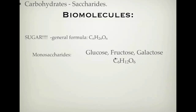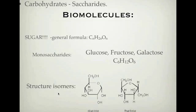All three monosaccharides have the formula C6H12O6. They all have the same formula; however, they have a slightly different structure — they are structural isomers, meaning the same formula but different structure. Glucose has a six-membered ring, whereas fructose has a five-membered ring, with a CH2OH group outside the ring. These are your basic building blocks for disaccharides and polysaccharides.